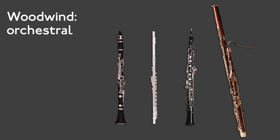Any instrument that needs air passing through it to make sound is a wind instrument. Wind instruments come in two distinct types. We're going to look at woodwind instruments first. These are the four basic woodwind instruments that you would find in the orchestra: the clarinet, the flute, the oboe, and the bassoon.